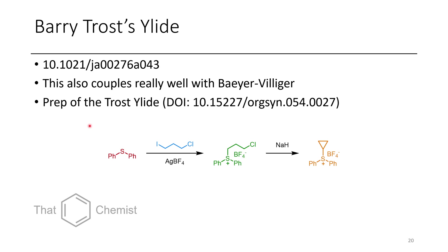Finally, I wanted to talk about the Trost ylid. The way they make this is by reacting a diphenyl thioether with a primary alkyl iodide, which undergoes displacement in the presence of silver tetrafluoroborate to form the tetrafluoroborate salt. Upon subsequent deprotonation with sodium hydride, the sulfonium ylid is formed, but the ylid can do an intramolecular SN2 reaction and displace a chloride as a leaving group, forming the Trost ylid. There's a reported Org. Synth. prep of this reagent if you want to make it yourself.